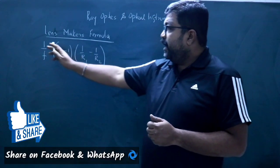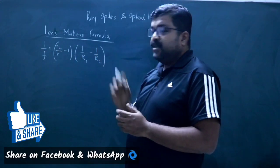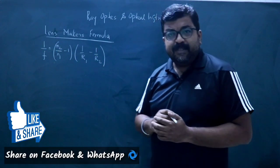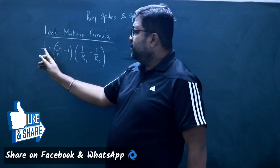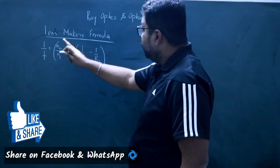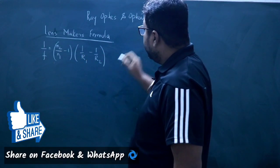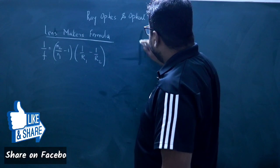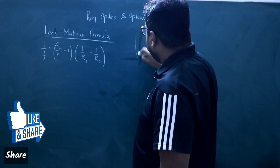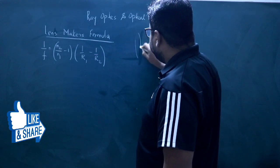First of all, we have to understand the formula — what are the symbols in this formula. This is the Lensmaker's formula. If it is a lens, I mean it is a convex lens.